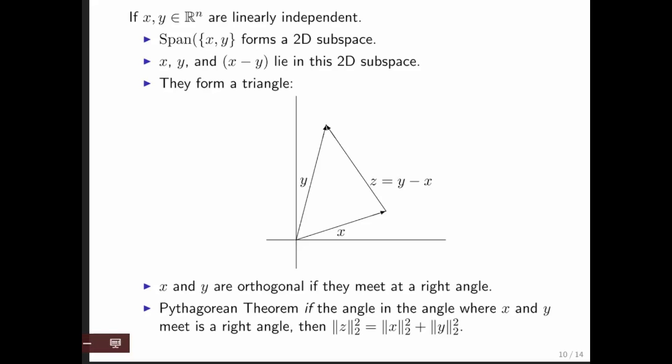The Pythagorean theorem tells us that if they meet at a right angle, then this squared must equal that squared plus that squared.